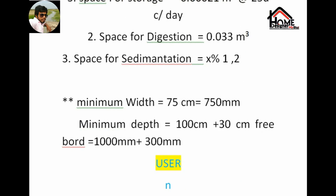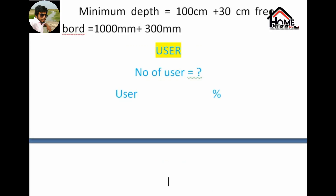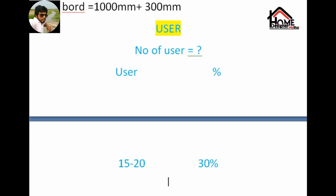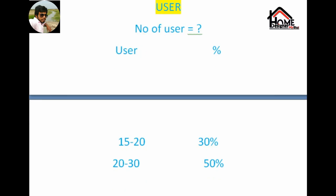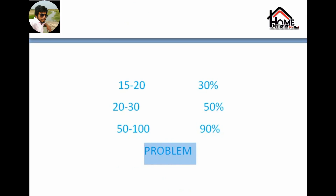Ab sedimentation ke liye dekhte hain — number of users aur percentage. Dosto, agar user 15 se 20 ho to 30 percent sedimentation hoga. Agar 20 se 30 ho to 50 percent sedimentation hoga. Aur 50 se 100 ho to 90 percent sedimentation hoga. School, college aur hospital ke liye 50 percent lena hai.